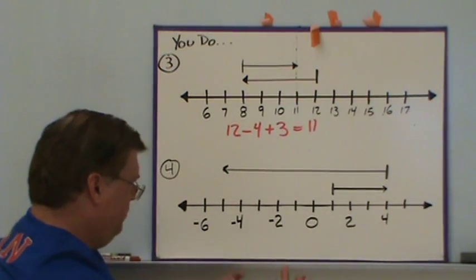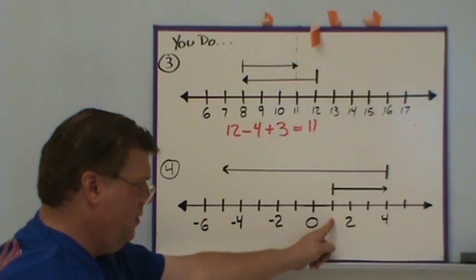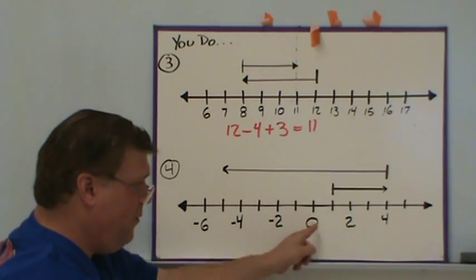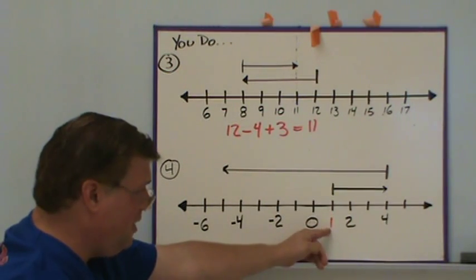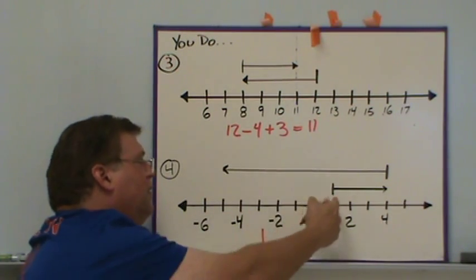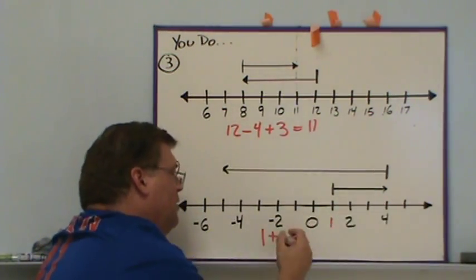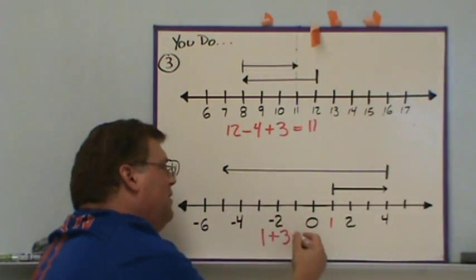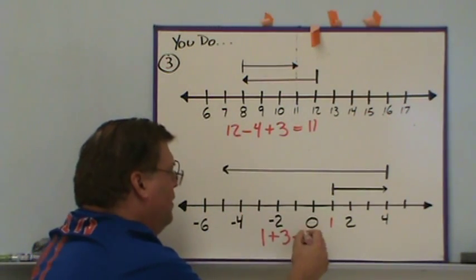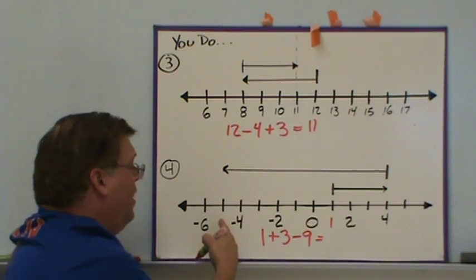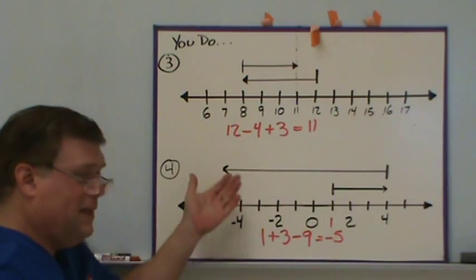For the second number line, some tick marks aren't numbered. We see zero and two labeled, and the starting point is right in the middle — halfway between zero and two is one, so the starting point is one. Going to the right three steps means adding three. Then going to the left nine steps means subtracting nine. The ending point is between negative four and negative six, which is negative five. So the equation is one plus three minus nine equals negative five.